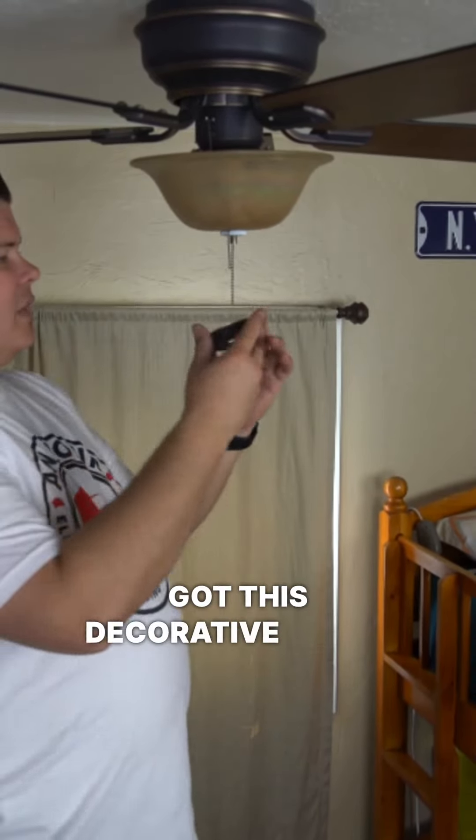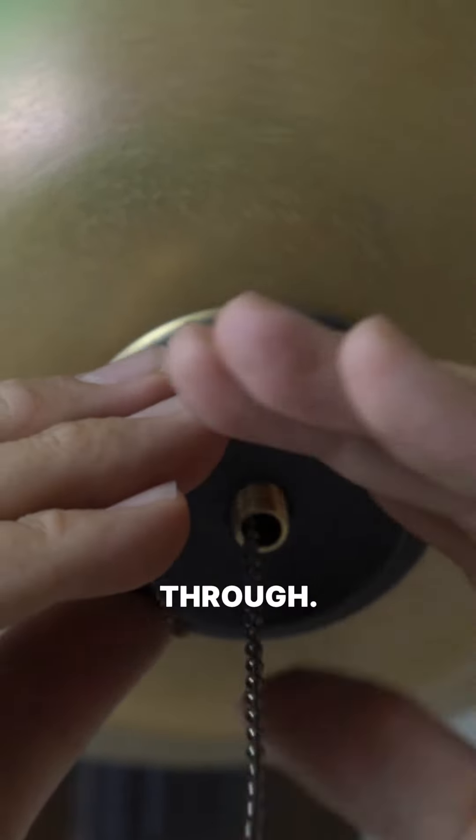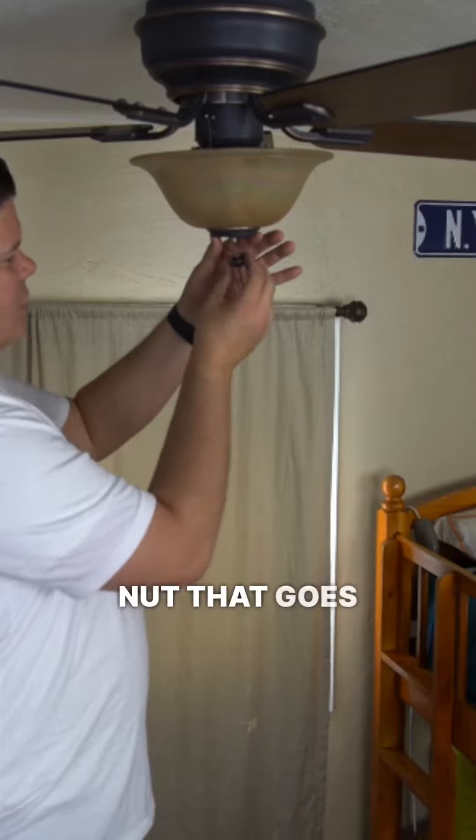Then you've got this decorative cover plate. It's got two holes as well. Fish both chains through. And then this nut that goes over the top.